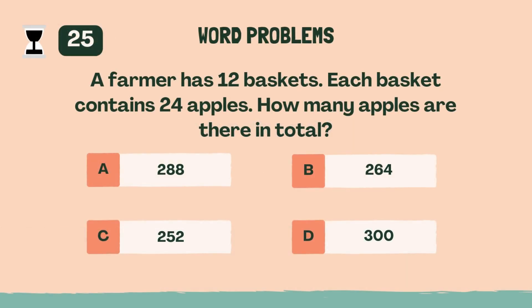Category 4, word problems. Three, two, one, go. A farmer has 12 baskets, each basket contains 24 apples. How many apples are there in total?